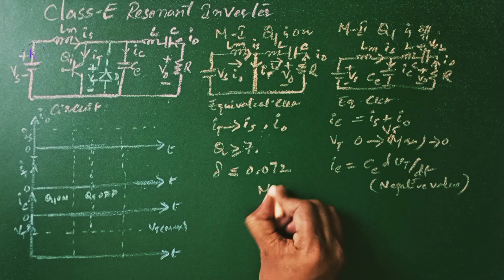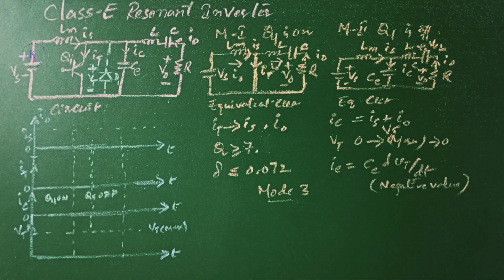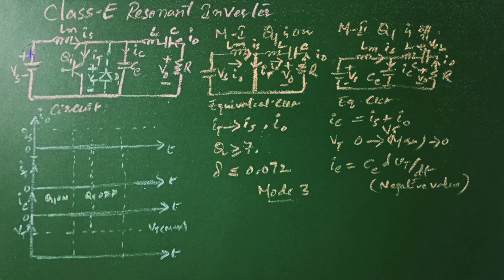There is a hidden mode, that is Mode 3. This mode will exist only if the switch voltage falls to 0 with a finite negative slope.